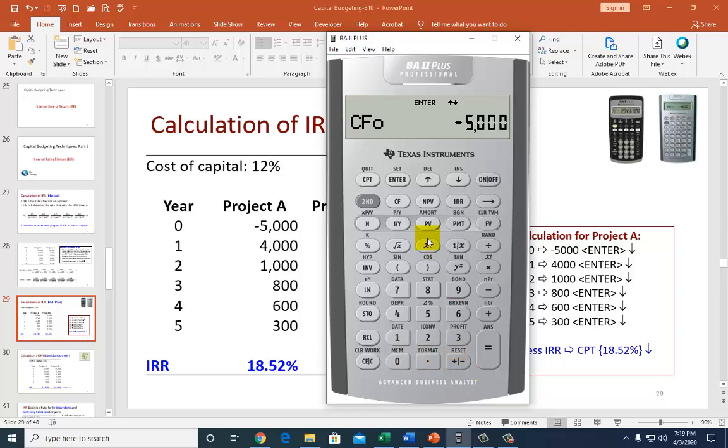So, you do that by hitting this plus minus key, and then enter. All right, don't forget to enter. You've got to do that. And then scroll down to C1, and C1 is 4,000. Enter.